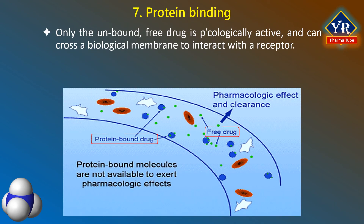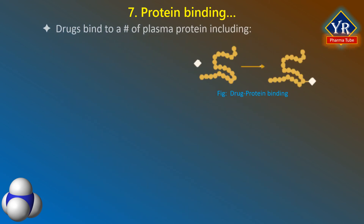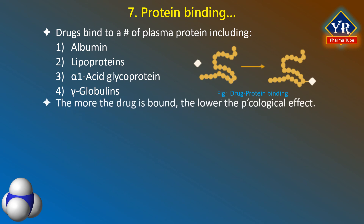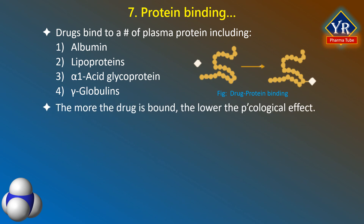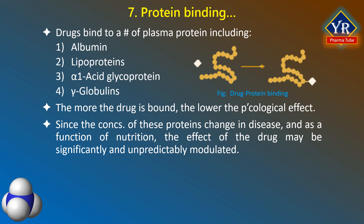Protein binding. Only the unbound free drug is pharmacologically active — only in this form can it cross a biological membrane or interact with a receptor. Interaction with the receptor results in a biochemical change leading to a physiological response. Drugs bind to a number of plasma proteins including albumin, lipoproteins, alpha-1 acid glycoprotein, and gamma globulins. The more extensively the drug is bound, the lower will be the drug activity available to exert a pharmacological effect. Since the concentrations of these proteins change in disease and as a function of nutrition, the effect of the drug may be significantly and unpredictably modulated.